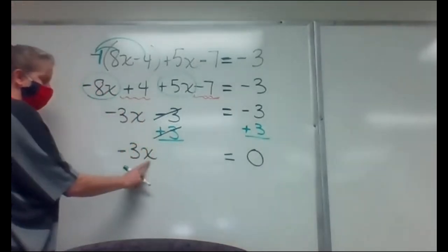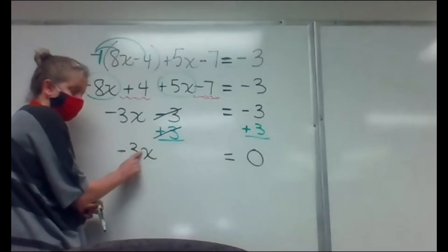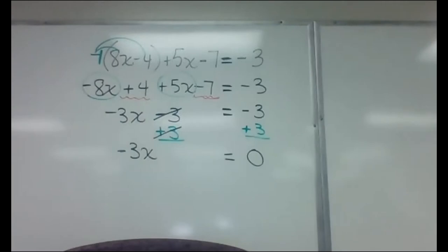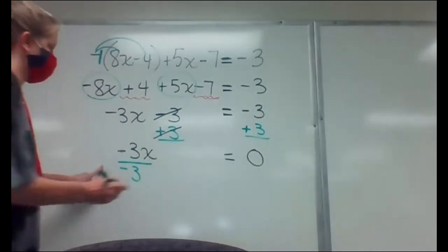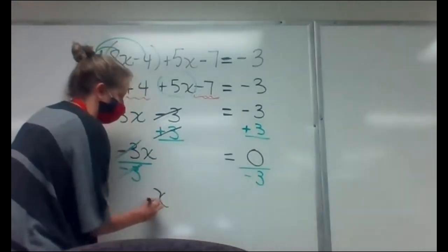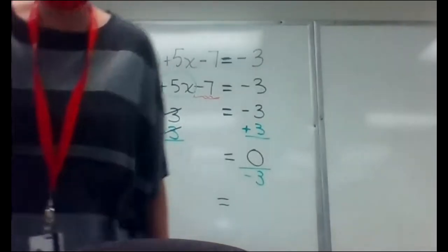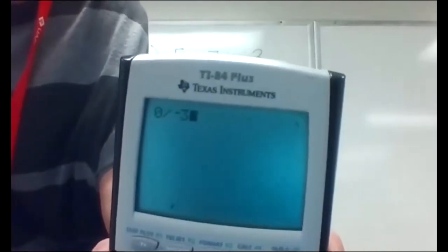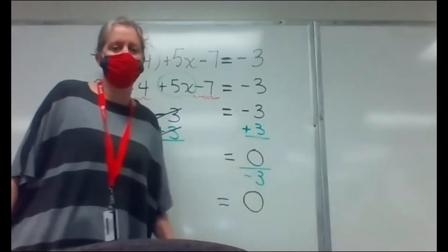Now there's one last step. There is a number hooked on — meaning there's no sign separating this negative 3 from that x. The way we get rid of hooked-on numbers is to divide by whatever it is, which in this case is negative 3. I divide both sides by negative 3. That knocks it out — there's my x all by itself. Once x is by itself, the number on the other side is your answer. Zero divided by negative 3 is zero. Zero over anything is still zero.